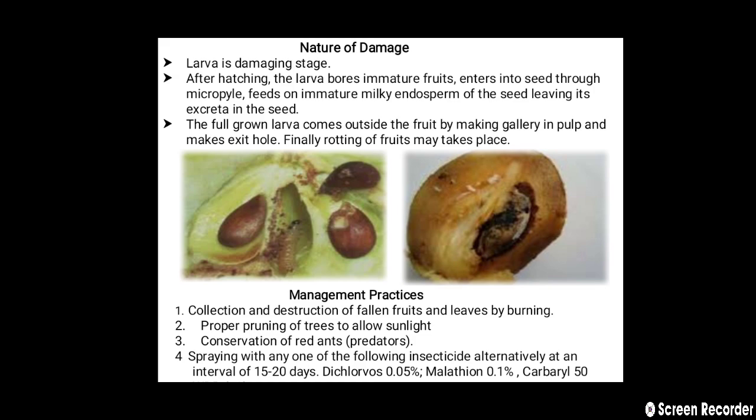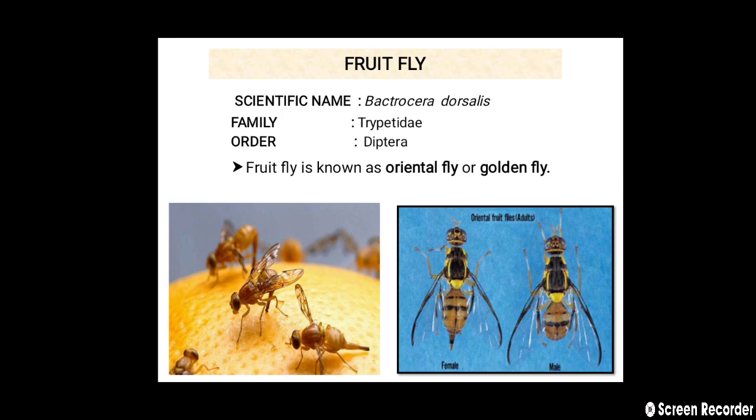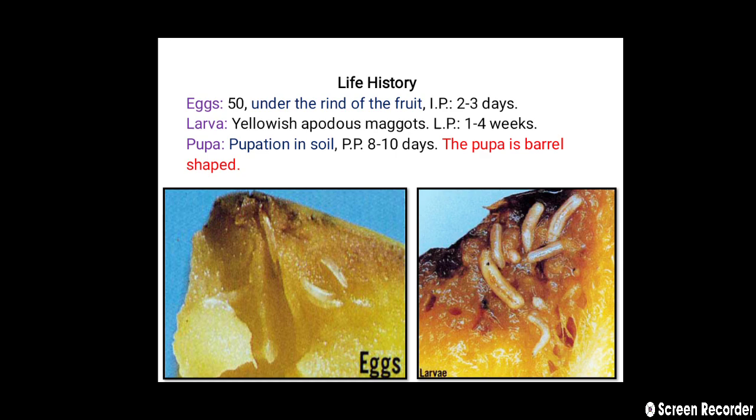The next pest is fruit fly. The scientific name is Bactrocera dorsalis. It belongs to the family Tephritidae, order Diptera. Fruit fly is also known as oriental fruit fly or golden fly. In the life history, eggs are deposited under the skin of the fruit. The larvae are yellowish apodous maggots. Pupation takes place inside the soil and the pupa is barrel-shaped.